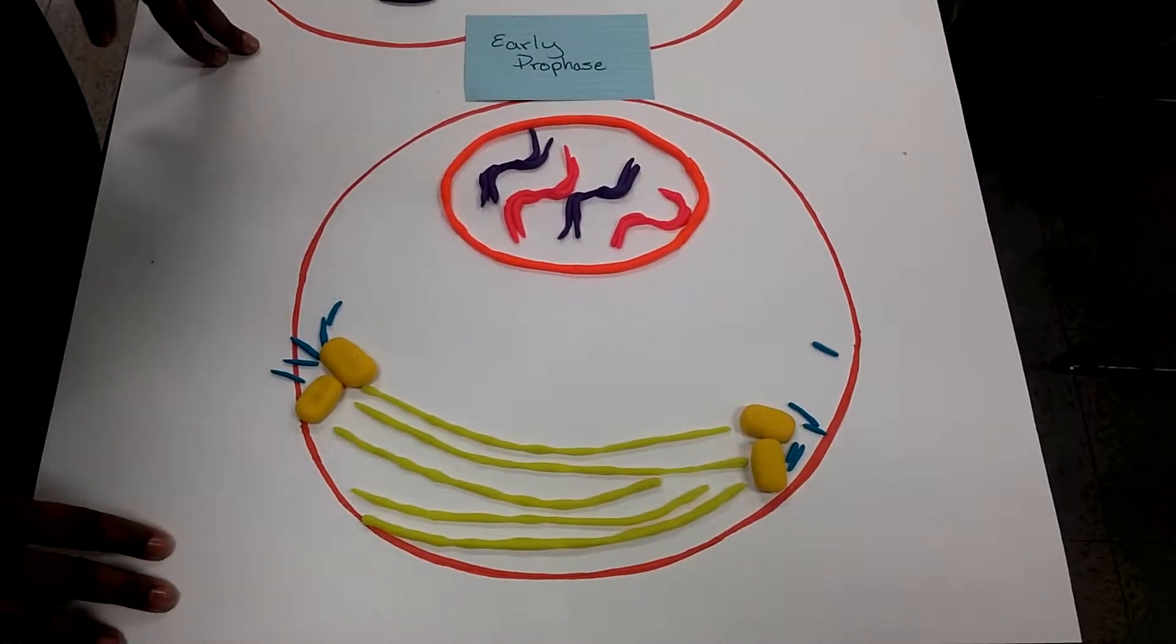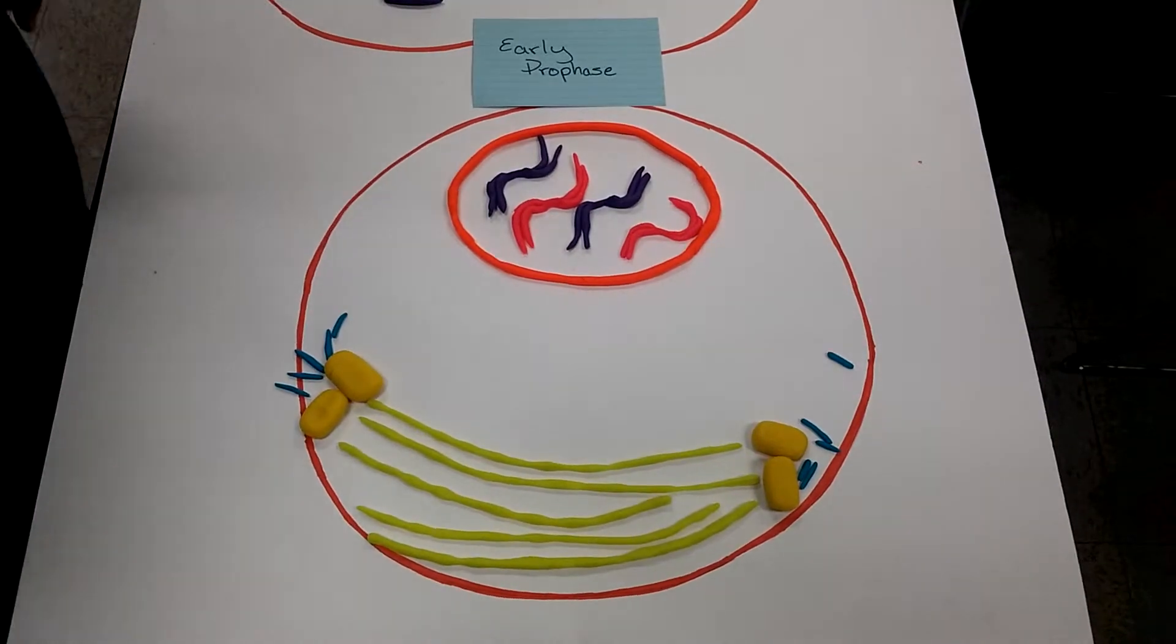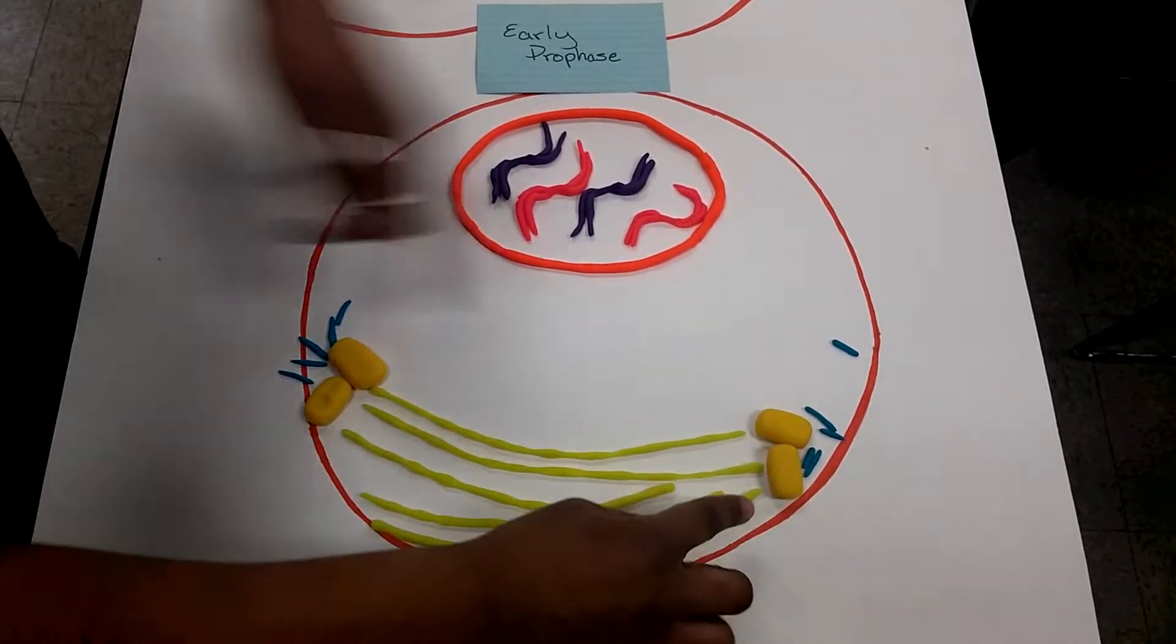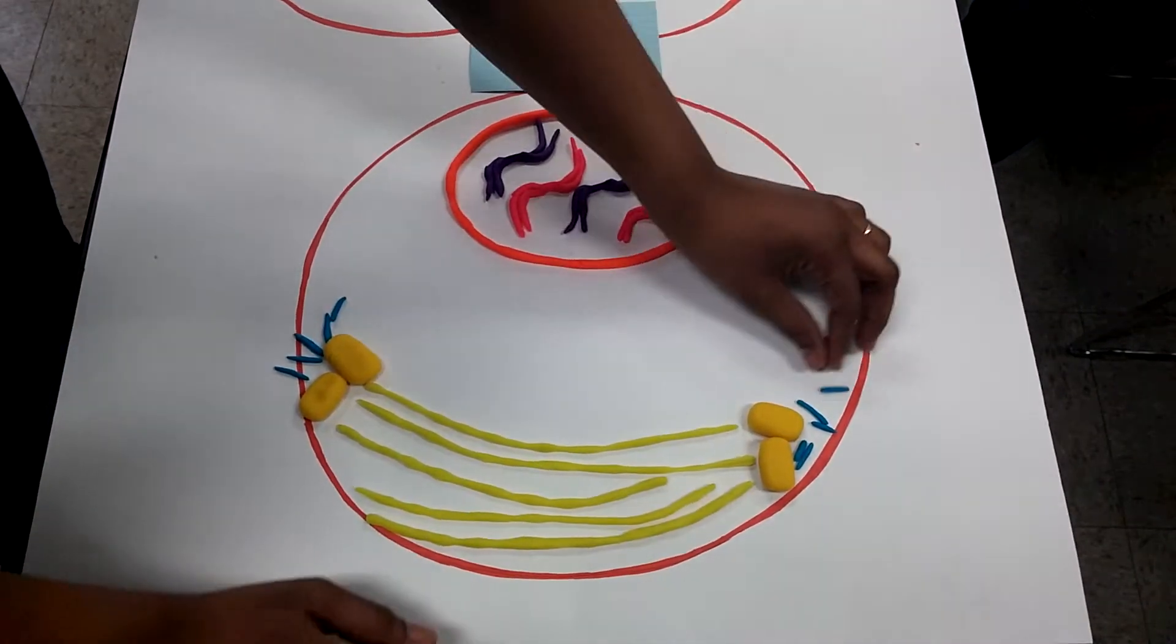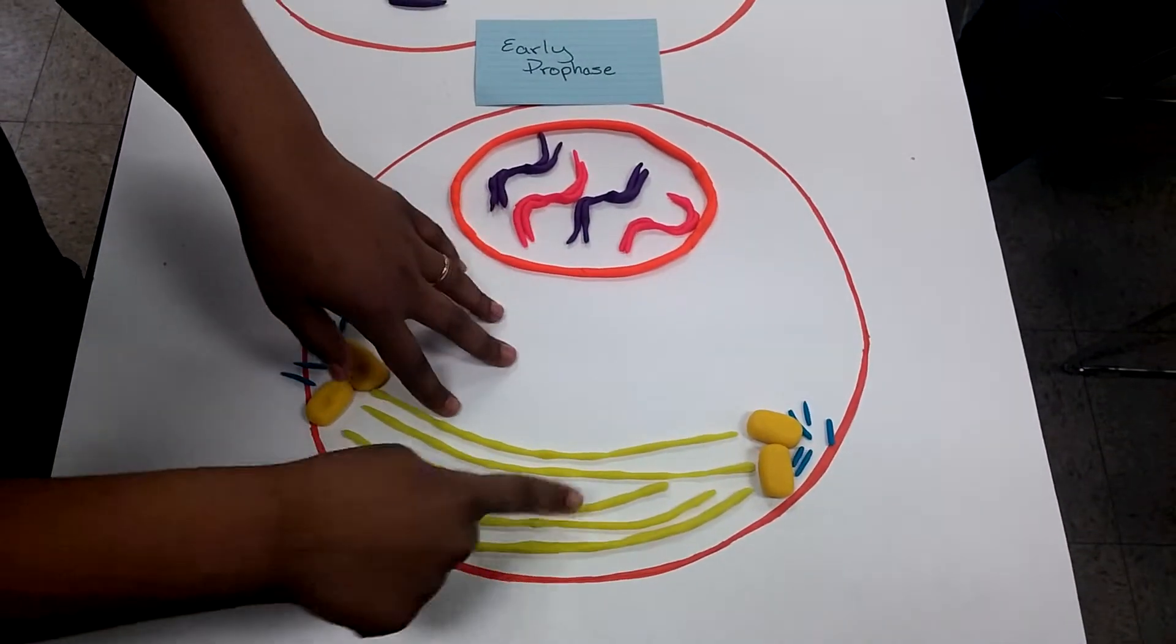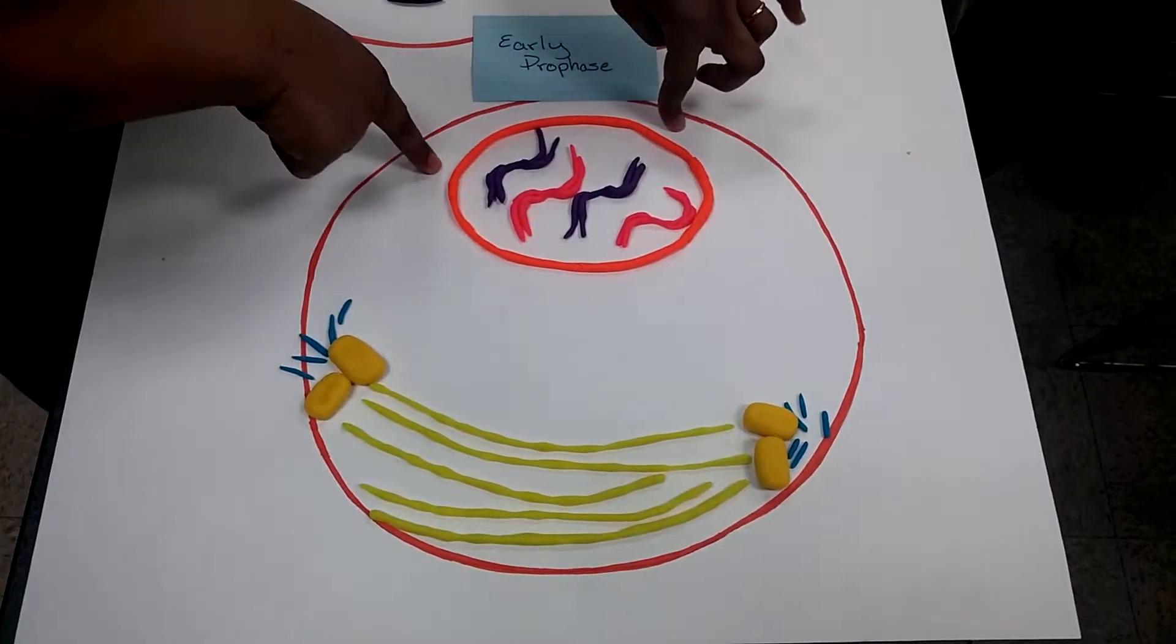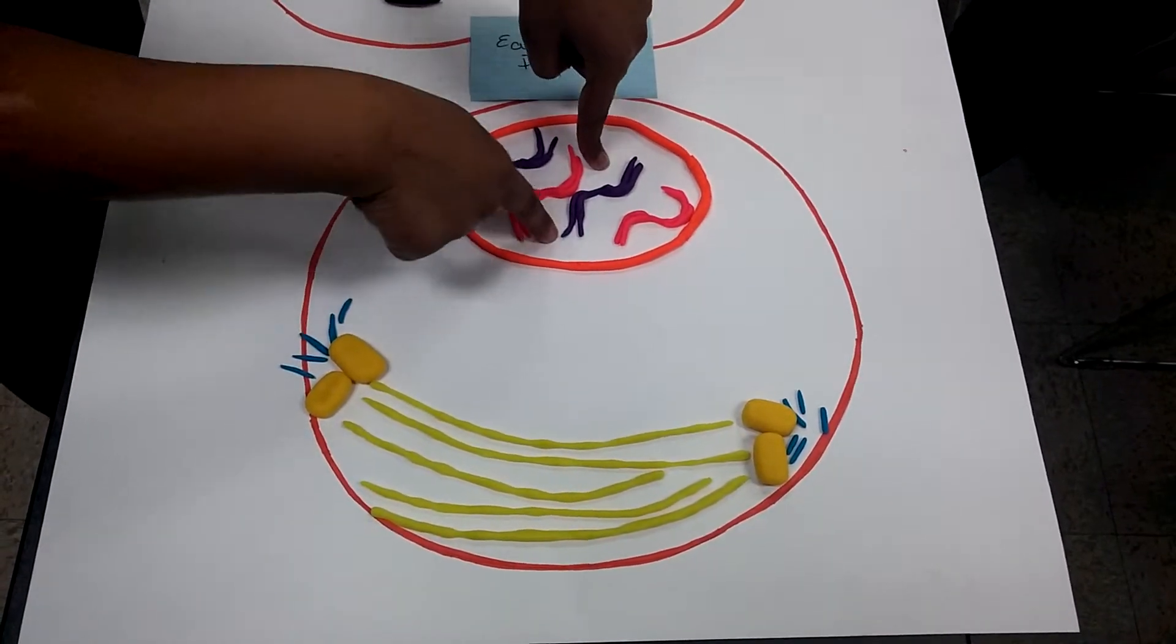We are beginning with early prophase of the cell cycle. As you can see, these are the centrosomes with the asters and these are the microtubules. Here you have the nuclear envelope with the condensed sister chromatids.